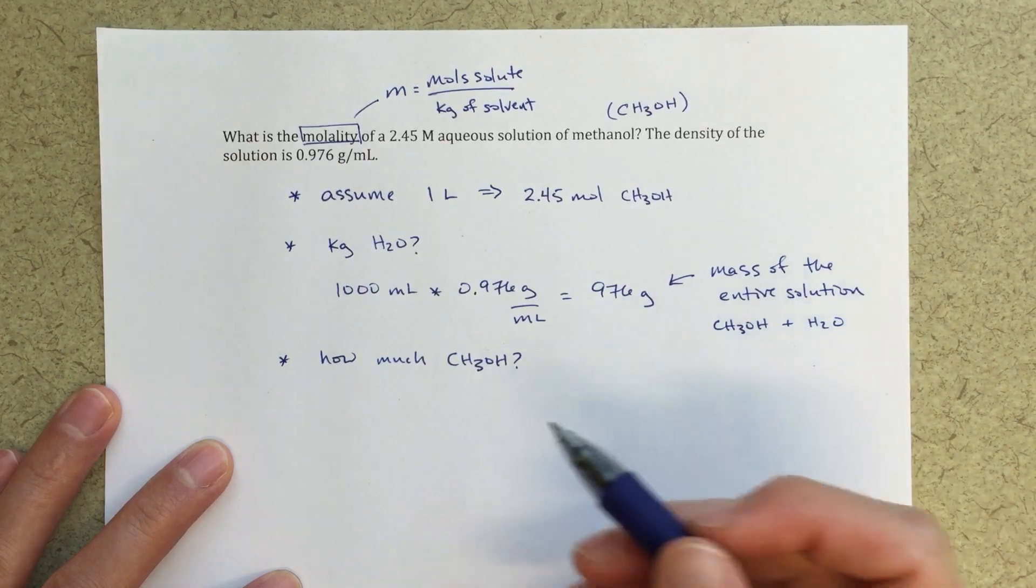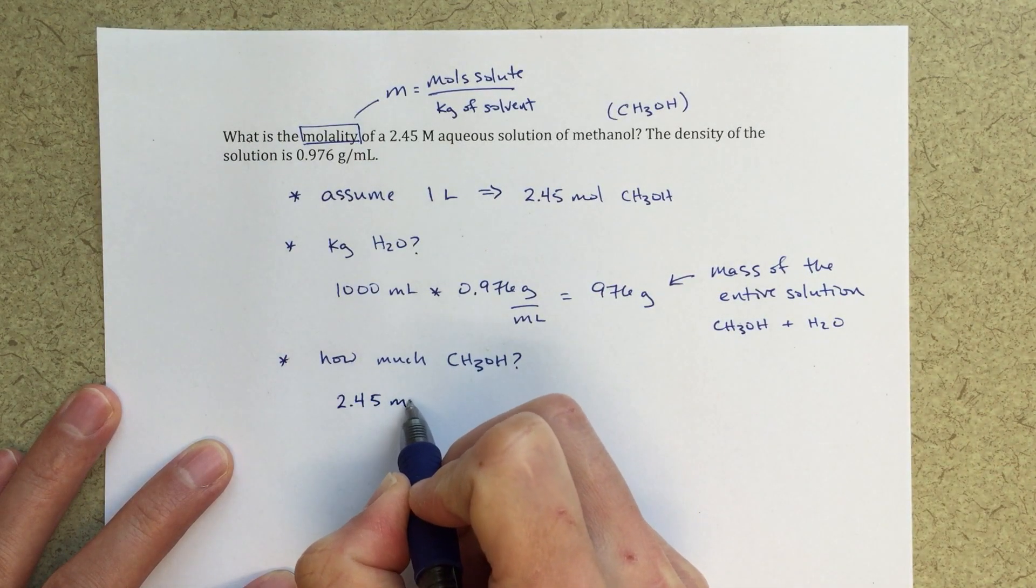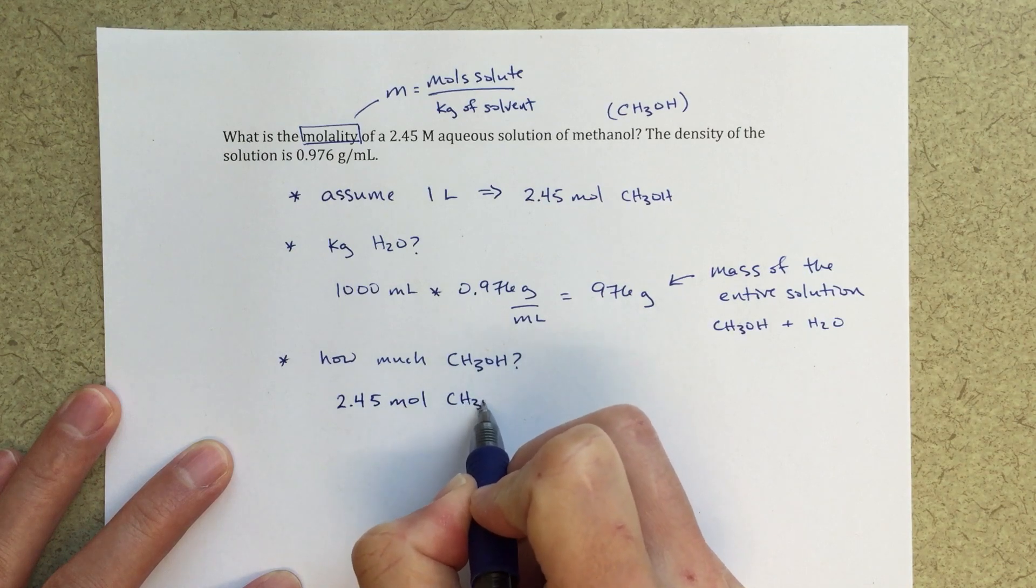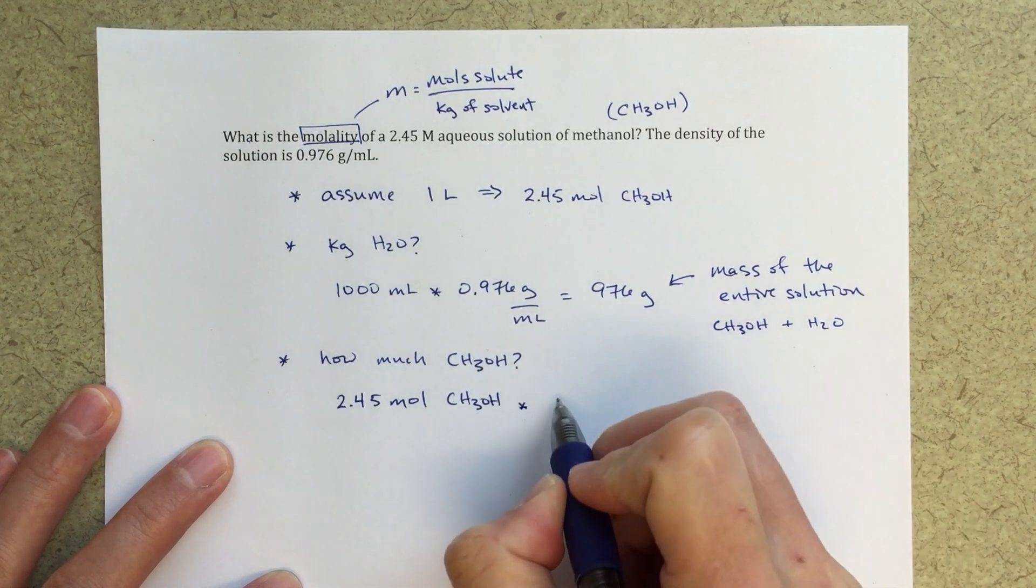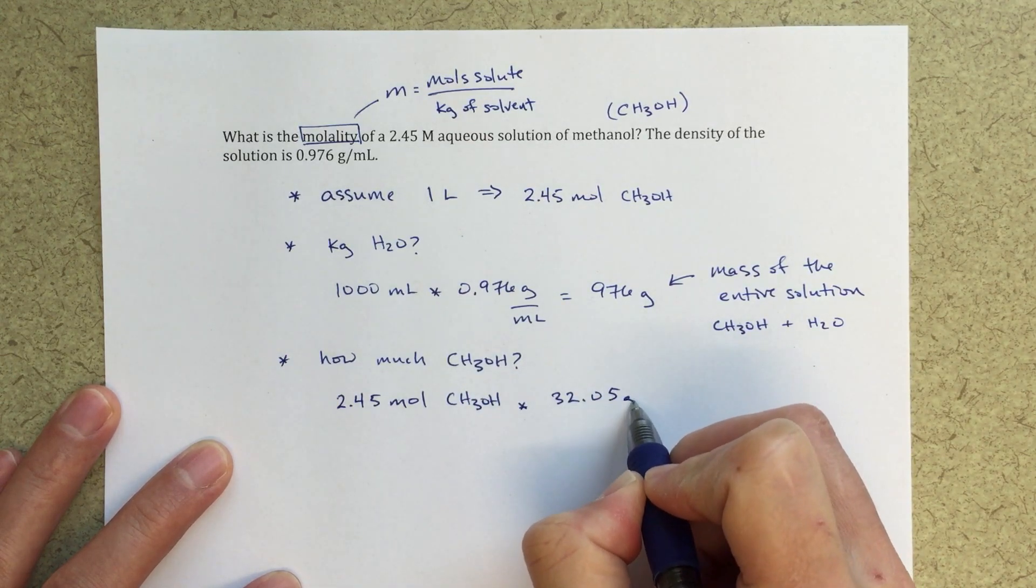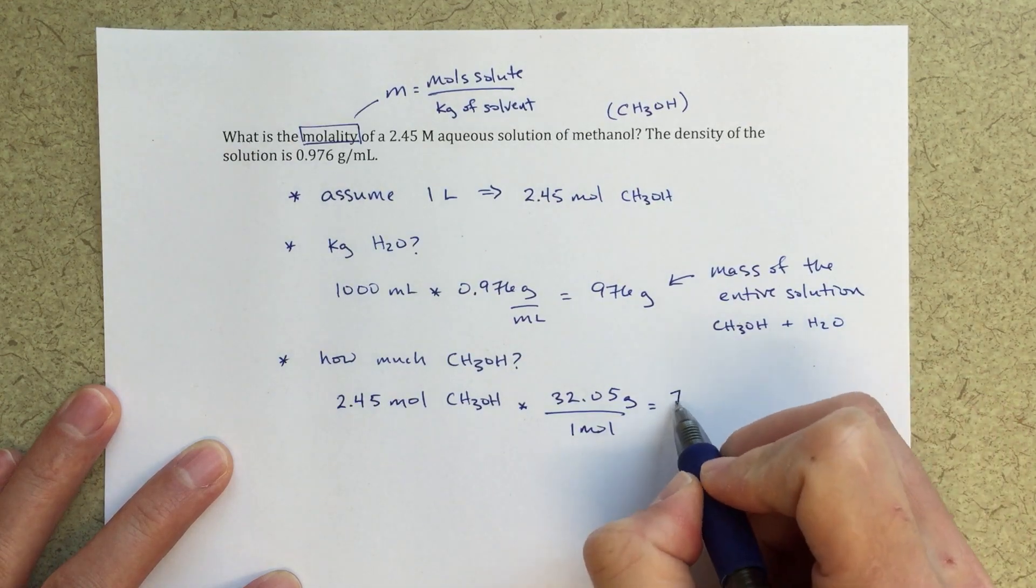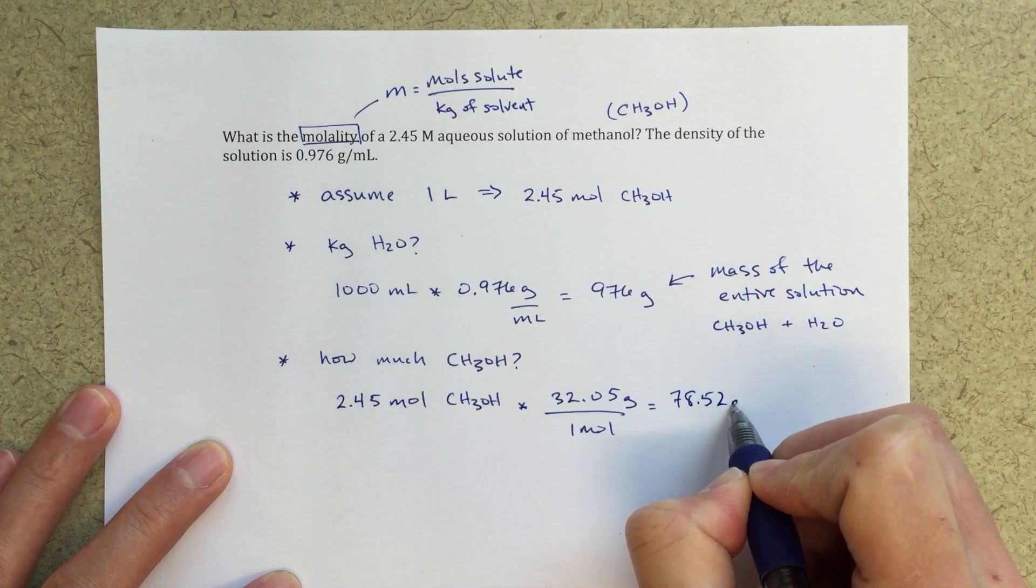I'm assuming one liter, then I can figure out how many grams of methanol - so this is moles of methanol - I can figure out how many grams of methanol I have. So 32.05 grams over 1 mole equals 78.52 grams.